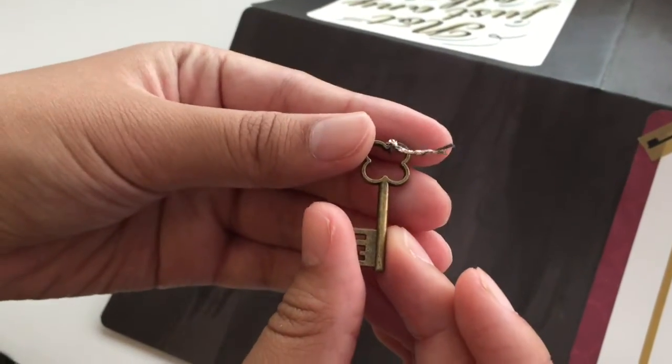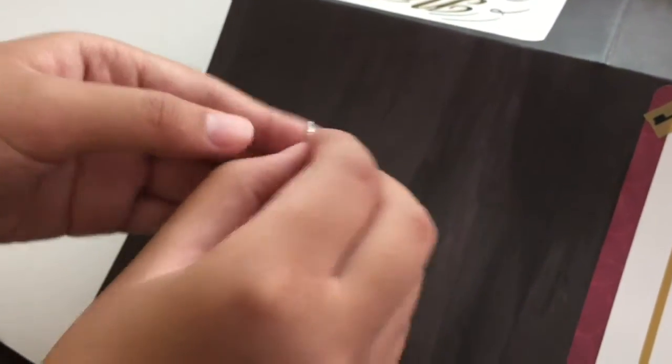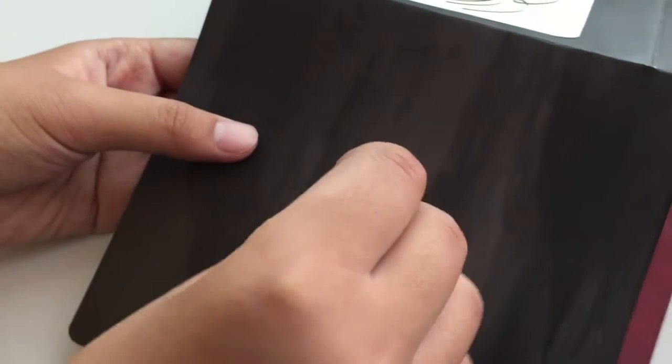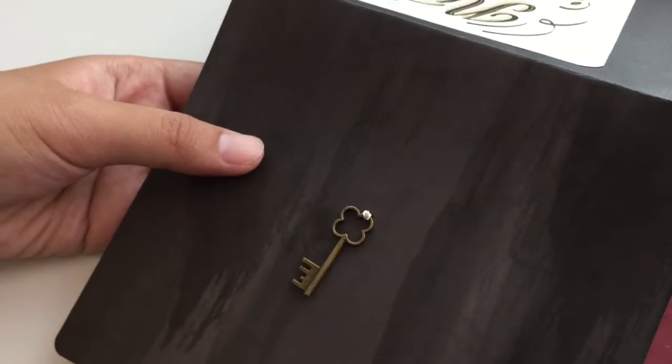Next, I'm going to punch a hole on the other side of the card. I'm doing this to add a key accessory so I can stick with the theme. I'm using a small twist tie to hook it onto the card.